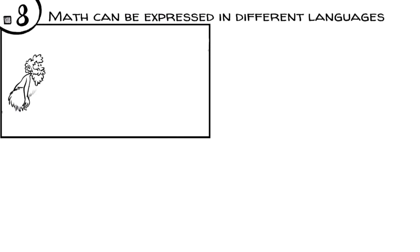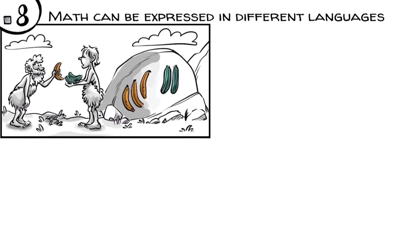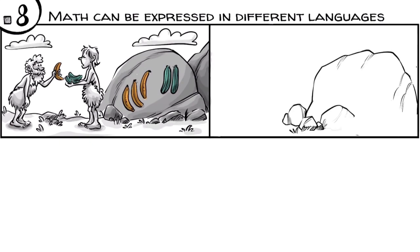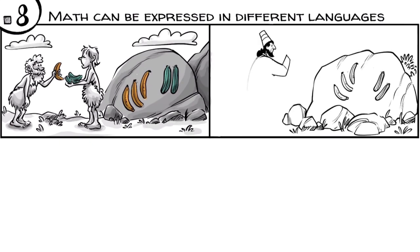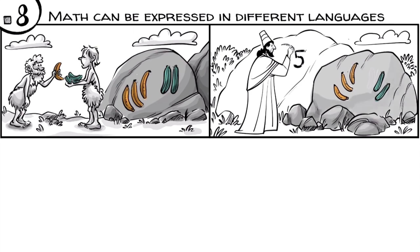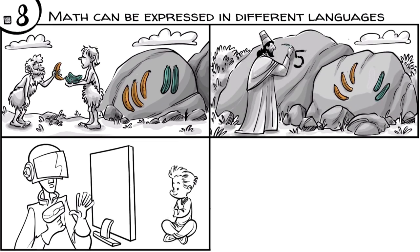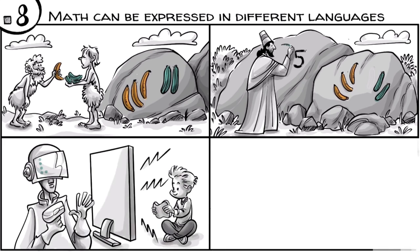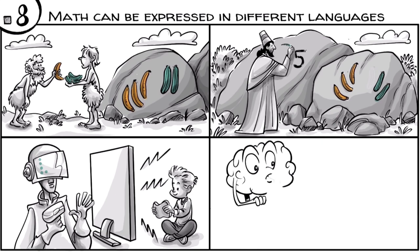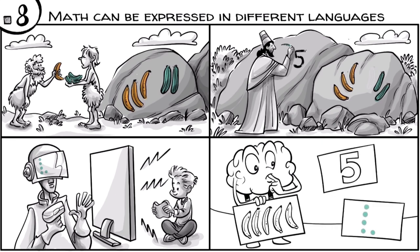Math can be expressed in different languages. A hundred thousand years ago, we used objects to express our mathematical thinking. Later, we used images. Around one thousand years ago, we began to reduce images to Arabic numeral symbols. In future, we might replace symbols with bits or express math in graphic simulations or games. In other words, while math thinking always happens in our heads, the language that represents our thinking is evolving.